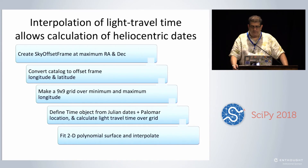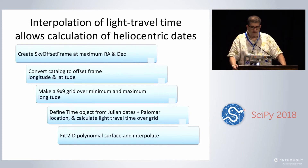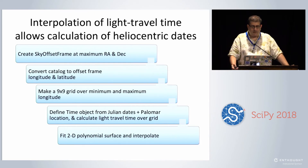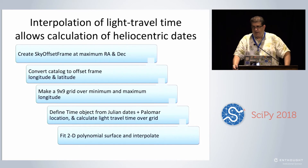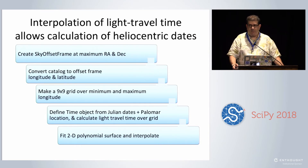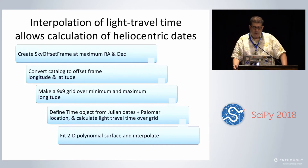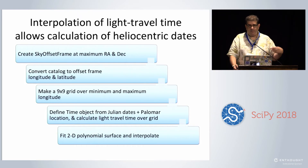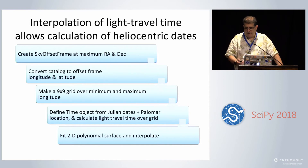Another problem we used AstroPy to solve: for variable star researchers trying to push detection of eclipsing sources to tens of minutes or less, you have the eight-minute light travel time between Earth and the Sun. To calculate heliocentric dates you need to calculate light travel time, which is dependent on the source location. We have 30,000 to 100,000 sources to apply this to, and it's too slow to call the AstroPy function one by one. So we use a sky offset frame — similar to the tangent plane — at the maximum RA/Dec to avoid zero-crossing problems. We set up a nine-by-nine grid, calculate the heliocentric travel time over that grid, and a two-dimensional quadratic polynomial works very well to solve it.